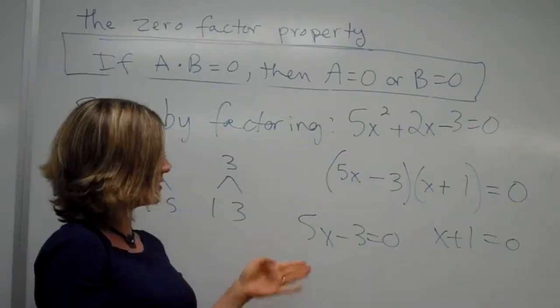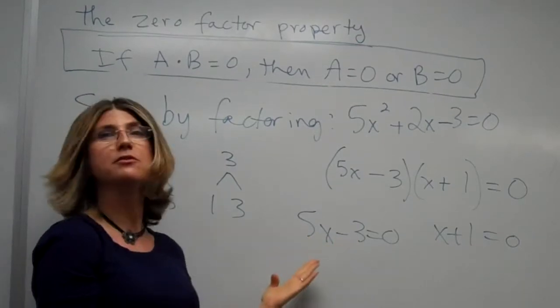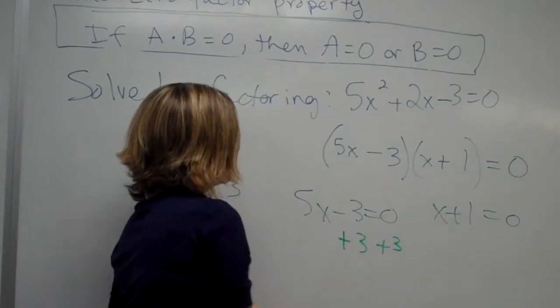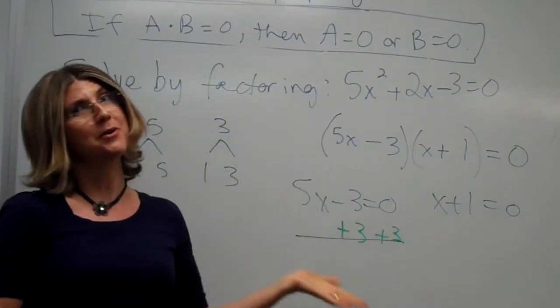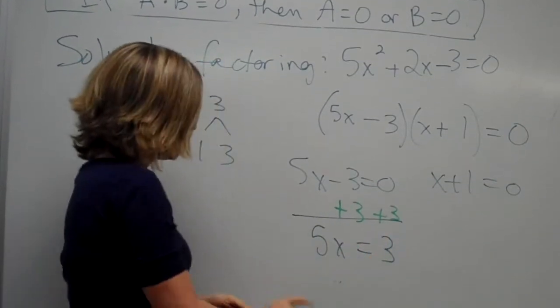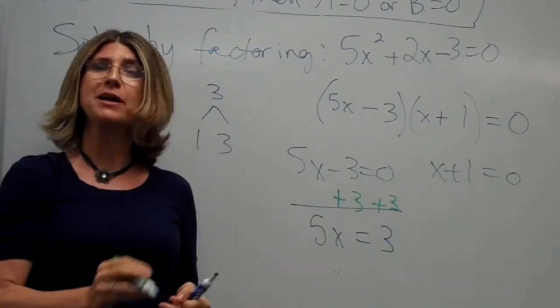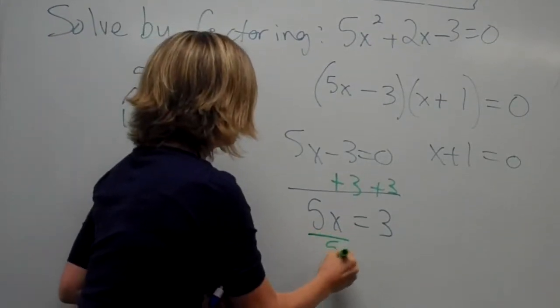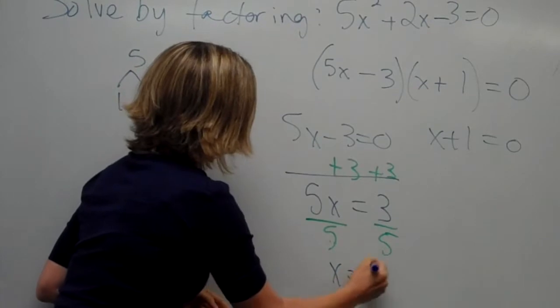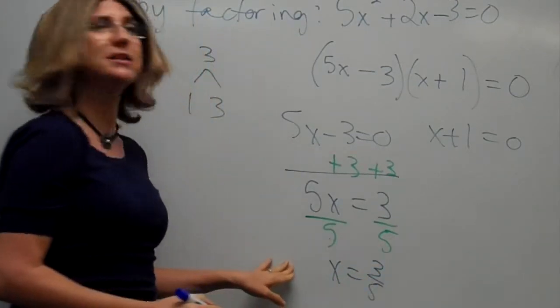So let's solve this one first. Since we're subtracting 3 from the x, we want to add 3. That's undoing subtracting 3. Of course, in math, we add it on both sides, which gives us 5x is 3. And then since we're multiplying by 5, we want to undo multiplying by 5, so we divide by 5. Of course, in math, we do that on both sides, which gives us x is equal to 3 fifths. That is one solution.